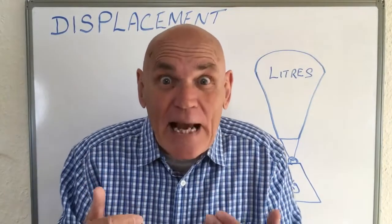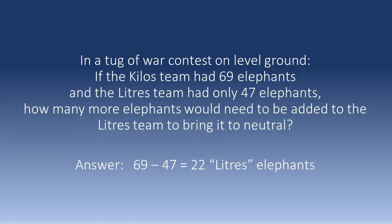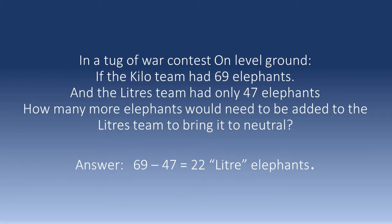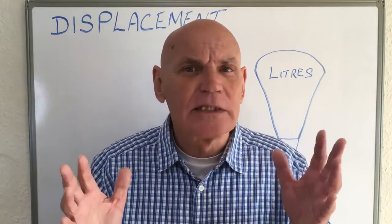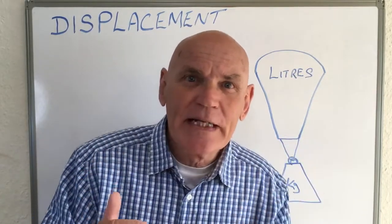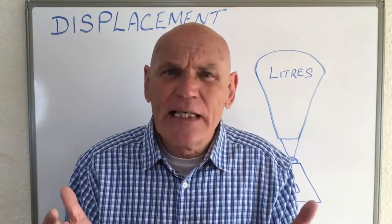Kilos versus liters - I told you it wouldn't take long. You probably don't realize it, but that's about everything - that's about it. So if a question were to ask: in a tug-of-war contest on level ground, if the kilo team had 69 elephants and the liters team had only 47 elephants, how many more elephants would need to be added to the liters team to bring it to neutral? The answer is 69 minus 47 equals 22 liters elephants. We simply subtract liters from kilos - it's really that simple.